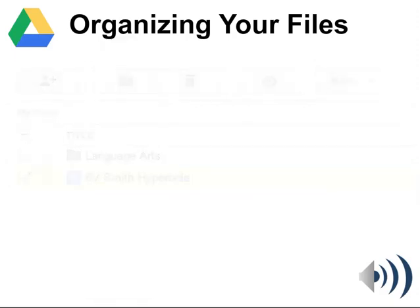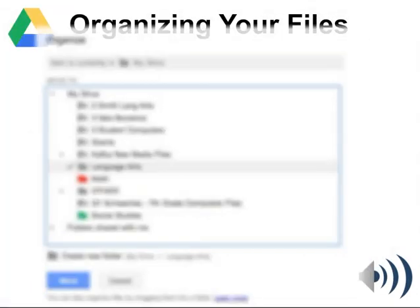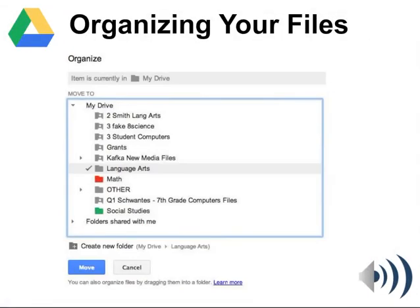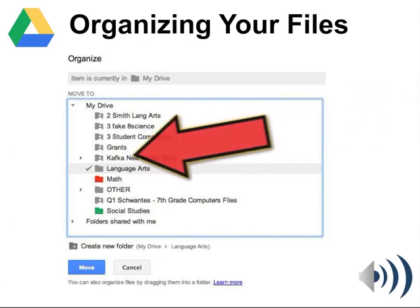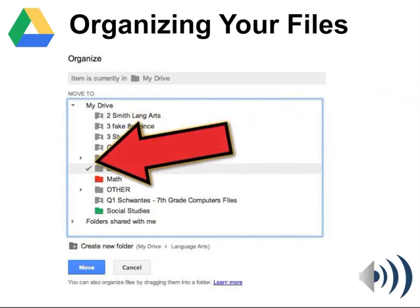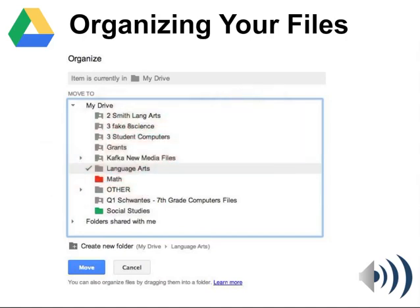This will open up the Organize window, which shows all your different folders, and now you can click on whichever folder you want that file to go into. So I've clicked on the Language Arts folder — this is saying the file will be organized into my Language Arts folder — and I would click Move at the bottom, and that file would now be organized into that folder.